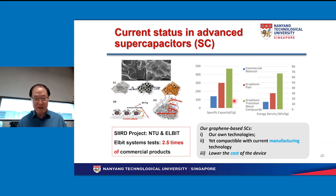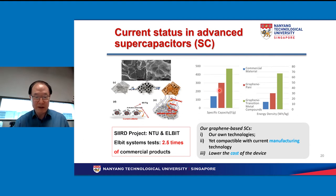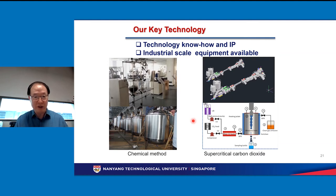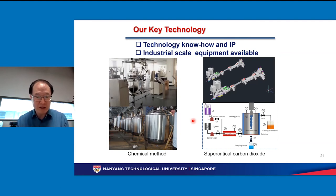Making the devices in their real production line using existing technology is critical for commercialization. Our performance is about two and a half times that of their current material. Our key technology has two parts: graphene production, for which we have two main scalable methods — a wet chemical method which is more mature but environmentally unfriendly, and a supercritical CO2 method which is a physical method producing chemical-free graphene.